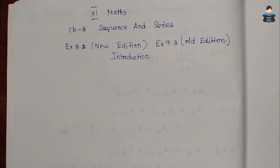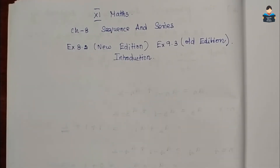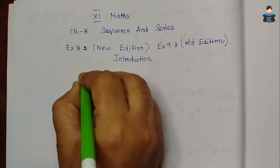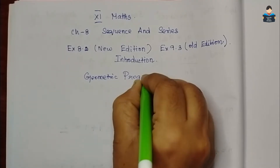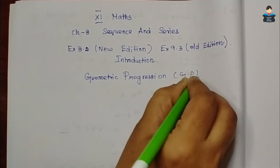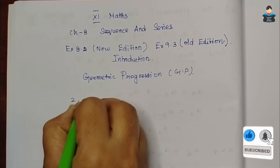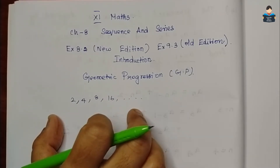Hello everyone, welcome to our channel. In this video we will look at Standard 11 Maths Chapter 8, Sequence and Series - Exercise 8.2 introduction. In the new edition book this is Exercise 8.2, and in the old edition it is 9.3. The topic we are going to see is sequences - for example, 2, 4, 8, 16 - this is a geometric progression with a constant ratio between the terms.